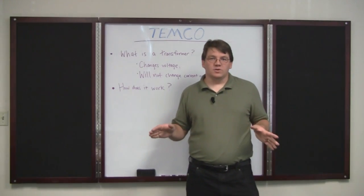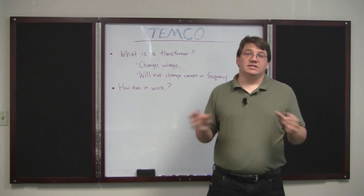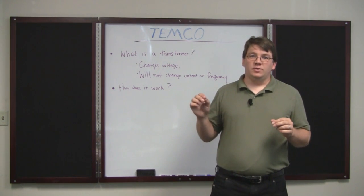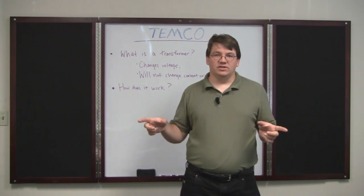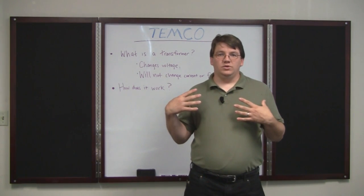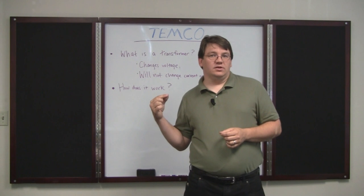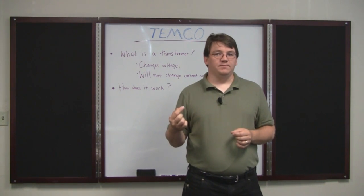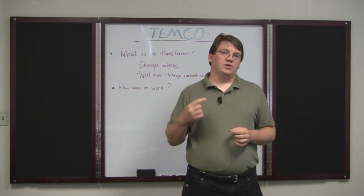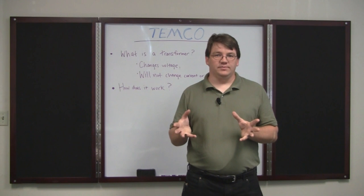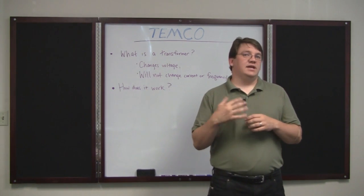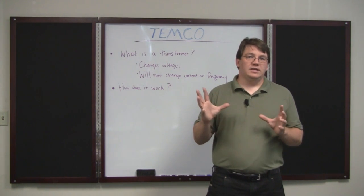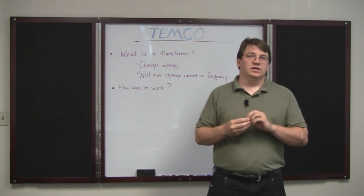A transformer works by putting these two principles together. So you have a primary coil and a secondary coil inside of a transformer. And what you do is you pass current, AC current, through the primary, and as that current flows through that coil it creates a magnetic field. That magnetic field overlaps onto the secondary coil of wire and induces a current into that.